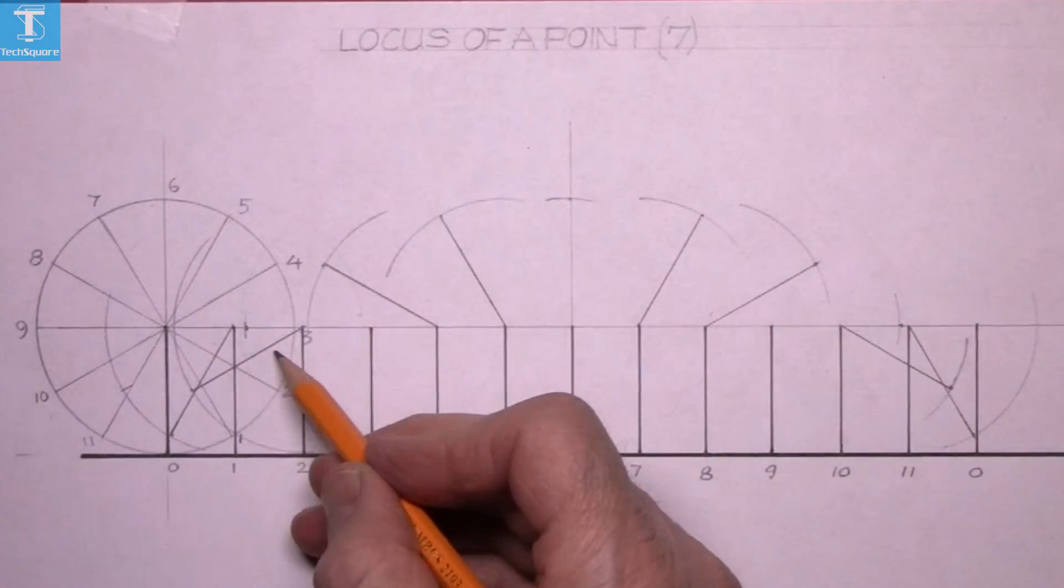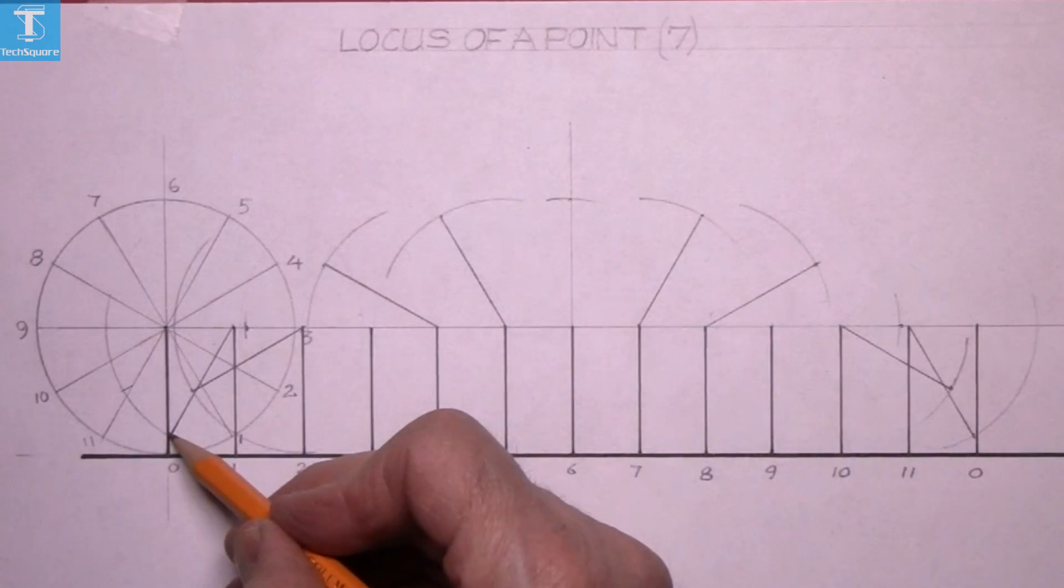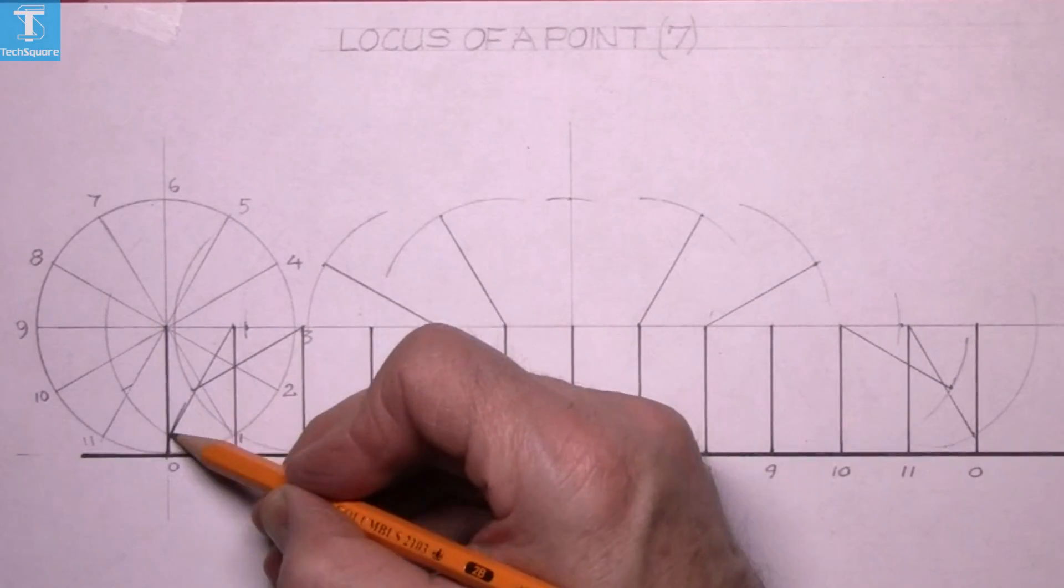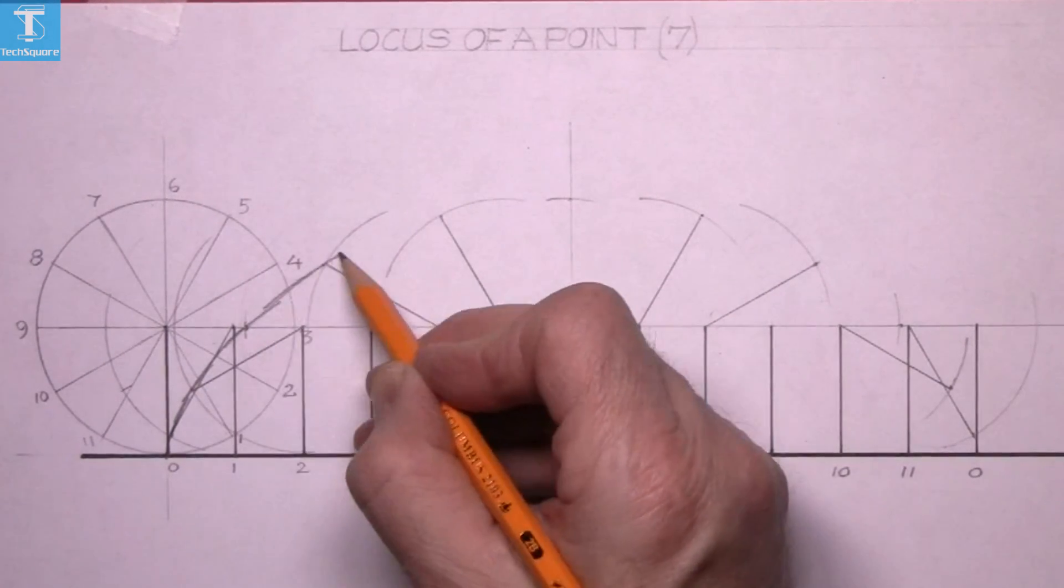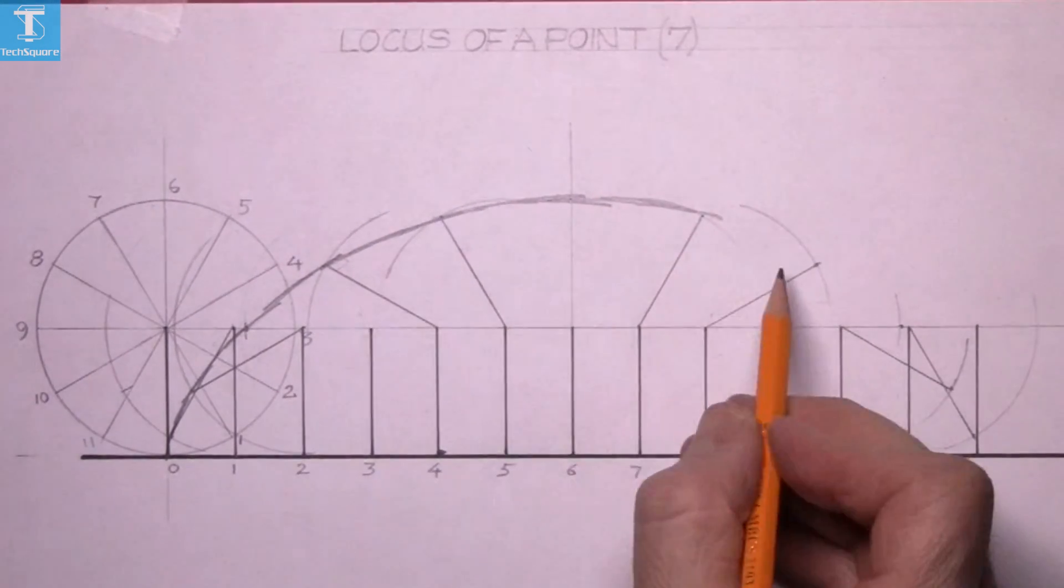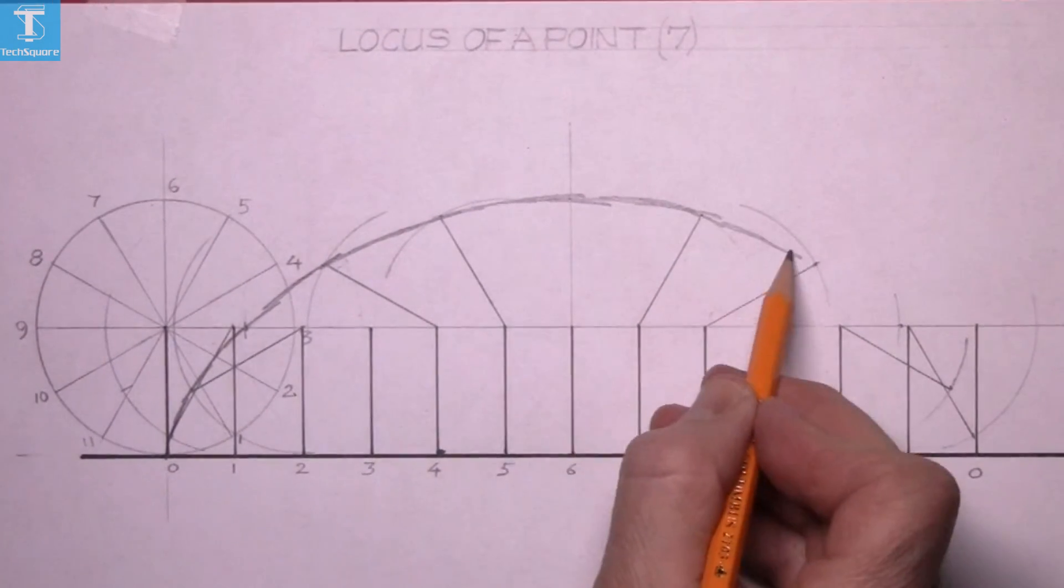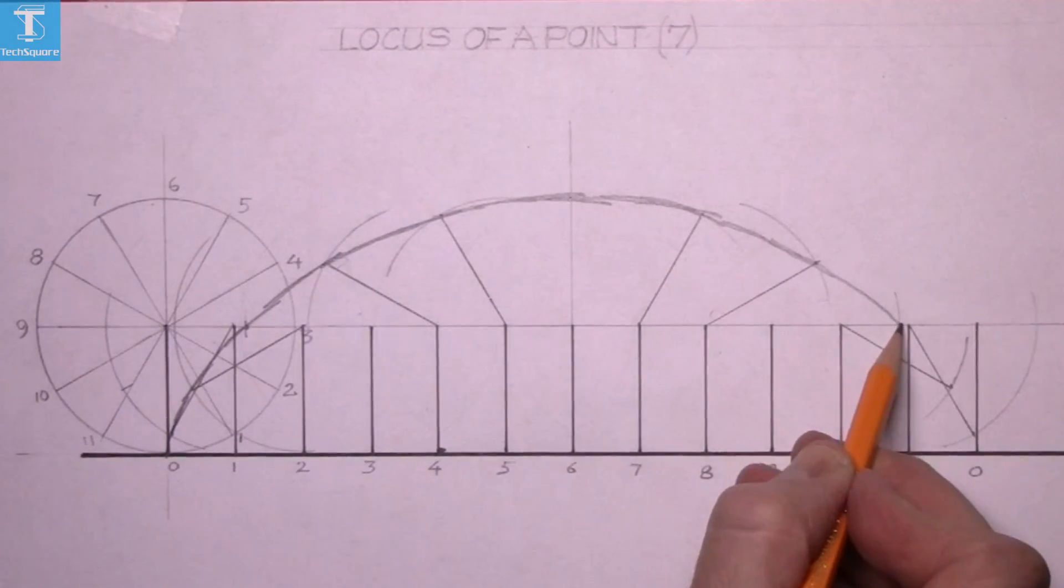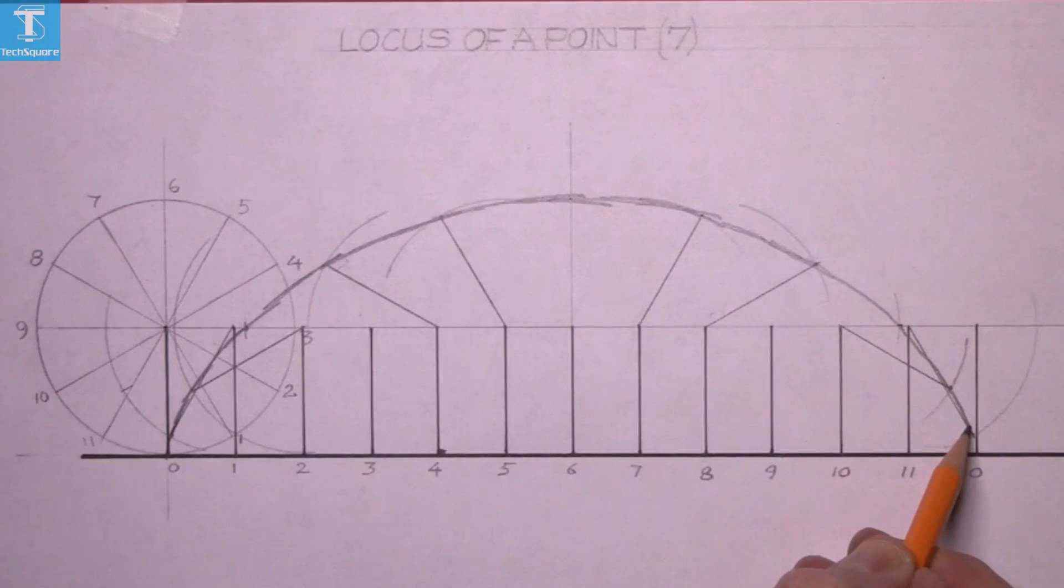Now it's a case of lining in the locus of the curve. Just line in the points. And that there is the locus of point zero as the circle moves along a straight line for one revolution.